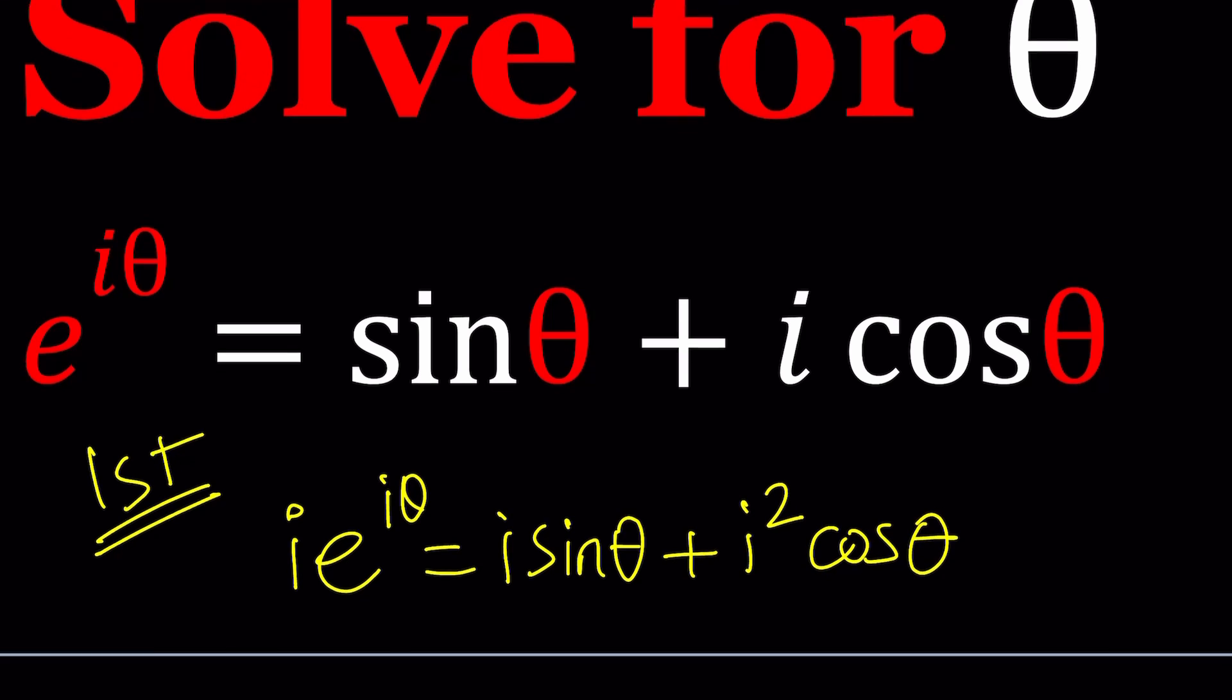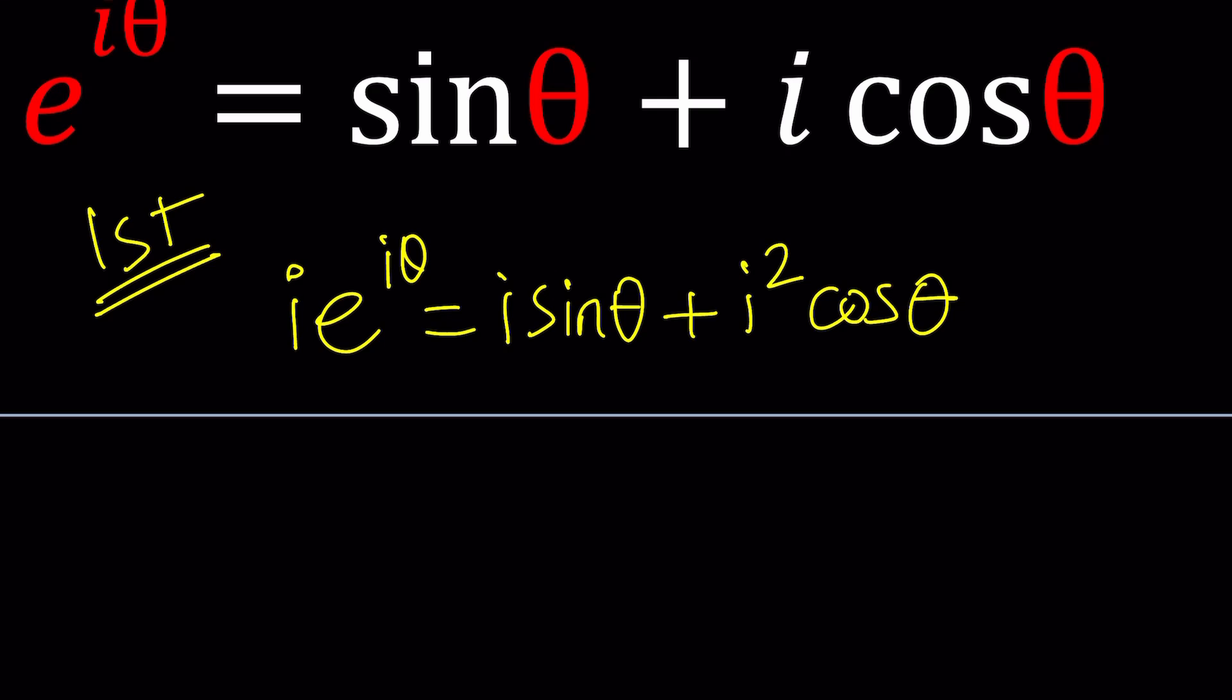Hopefully you know i squared is equal to negative one. If not, please check out the lecture videos or just look it up. i squared equals negative one. By definition, it's actually the number whose square is negative one. Imaginary number, whatever you want to call it. Fake number. It's actually very, very real, in a different sense.